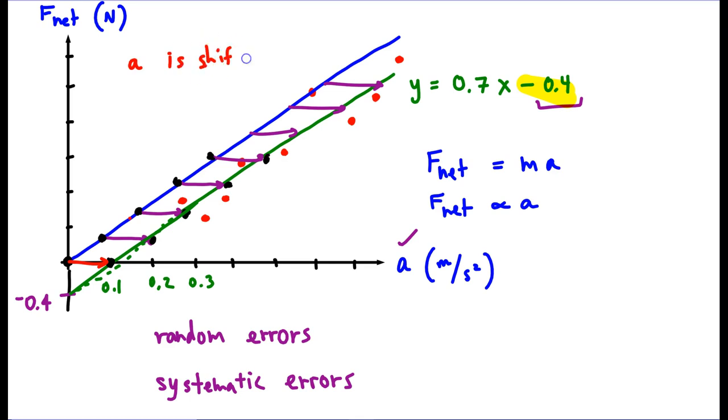You could say acceleration is shifted by positive 0.1 meters per second squared. Or, you could say, the net force measurements were shifted down, or just shifted by negative 0.4 newtons. And the negative would be one way of saying down, or you could just say the word down. So these are the two ways to describe your systematic error, your shift.